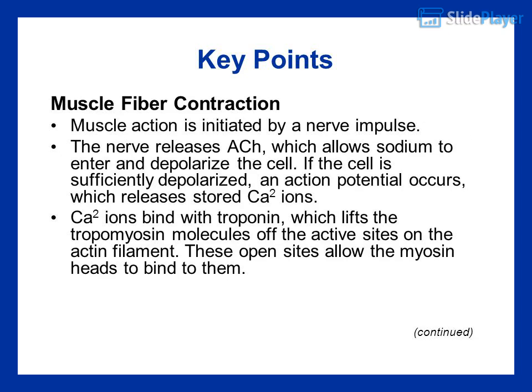Key points — muscle fiber contraction: muscle action is initiated by a nerve impulse. The nerve releases acetylcholine, which allows sodium to enter and depolarize the cell. If the cell is sufficiently depolarized, an action potential occurs, which releases stored calcium ions. Calcium ions bind with troponin, which lifts the tropomyosin molecules off the active sites on the actin filament. These open sites allow the myosin heads to bind to them.